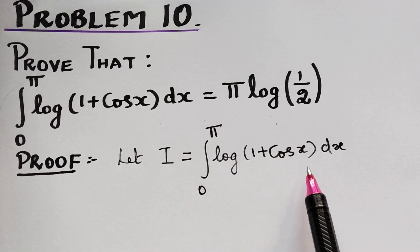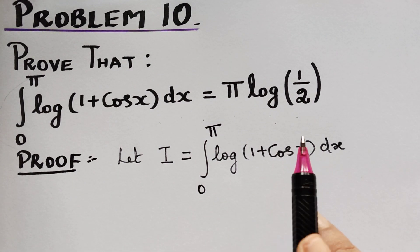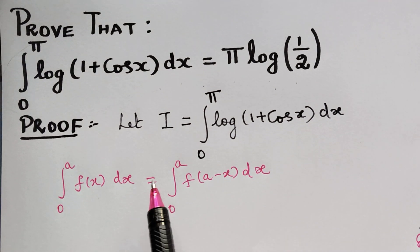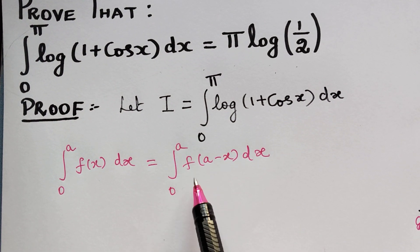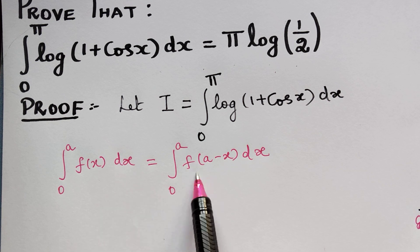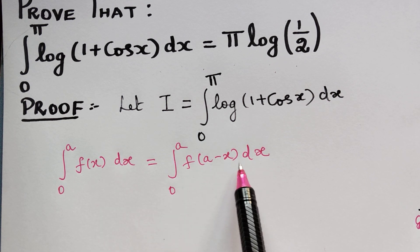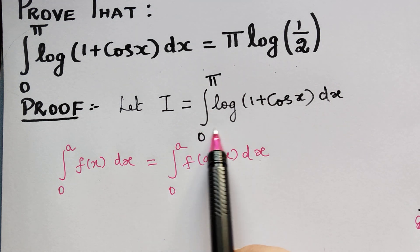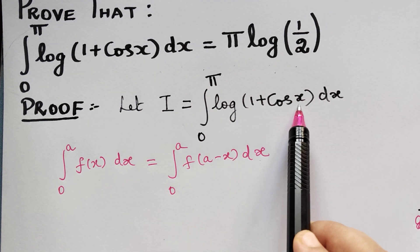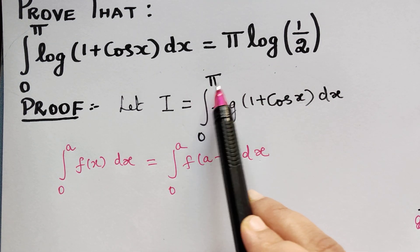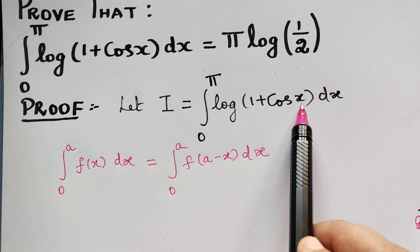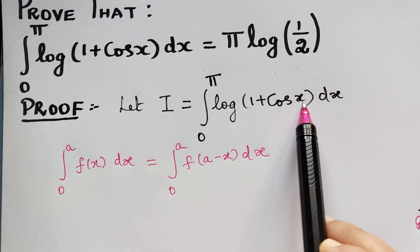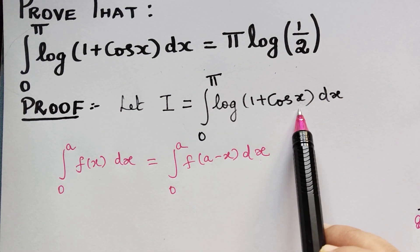Now by using a property under definite integrals, we know that the integral from 0 to a of f(x) dx can be written as the integral from 0 to a of f(a minus x) dx. Using this property on our integral, at the place of x we will be replacing by the upper limit minus x. The upper limit is pi, so we will replace x by pi minus x.